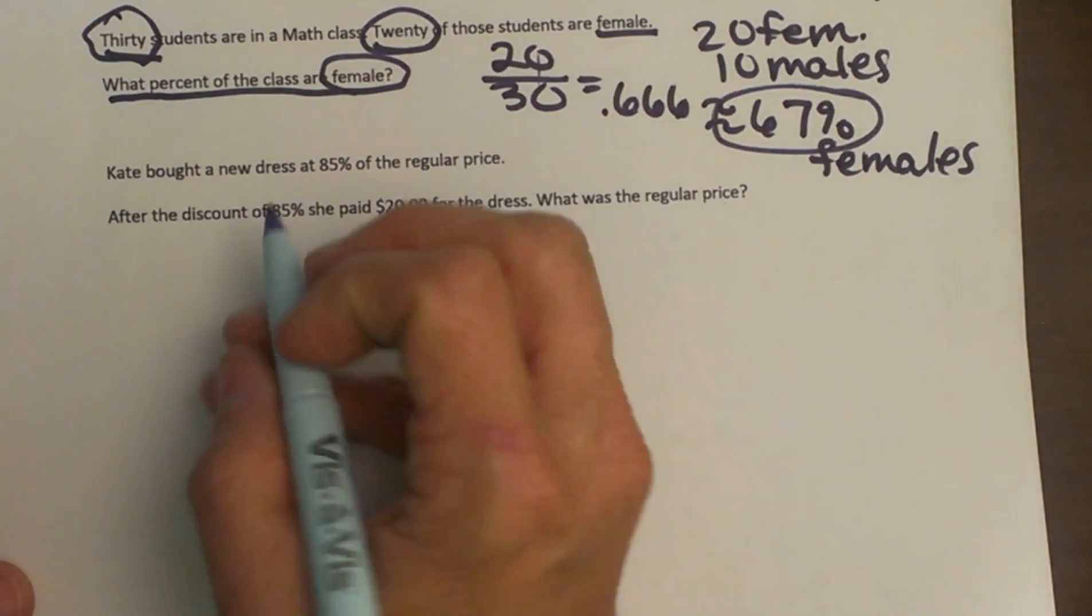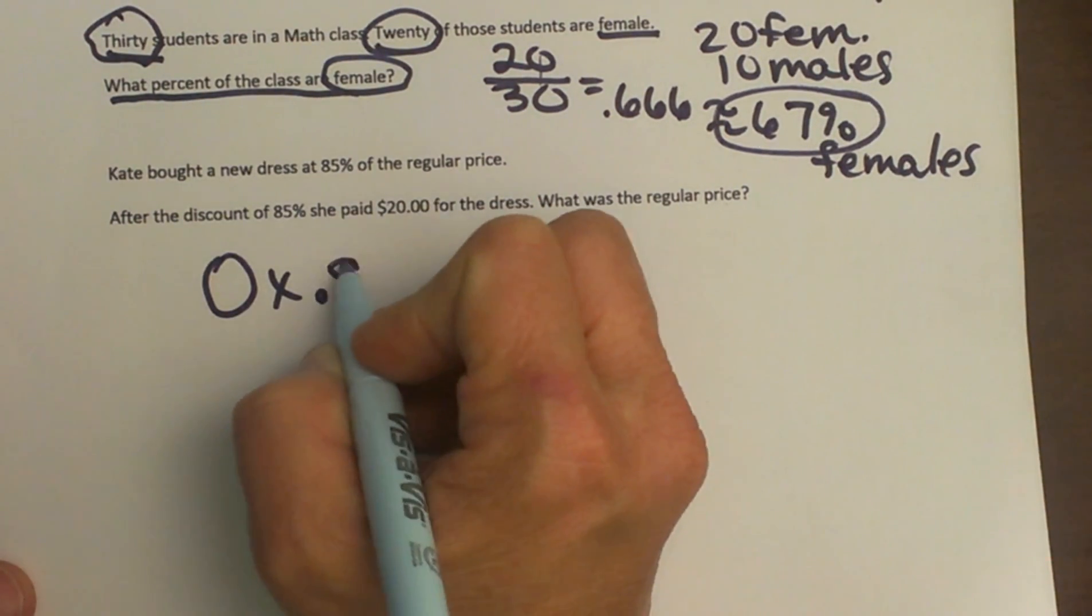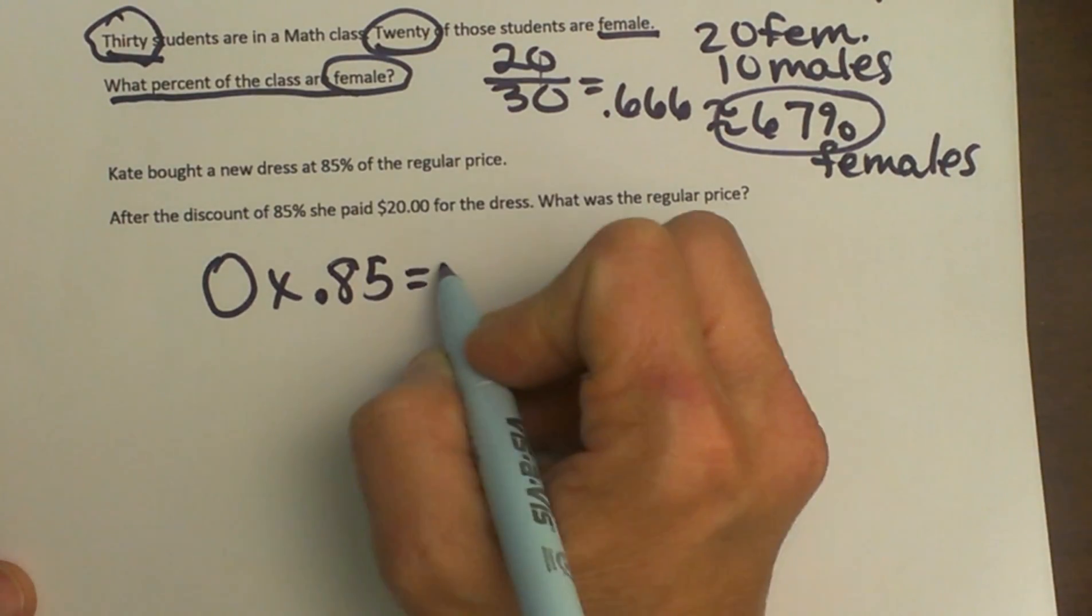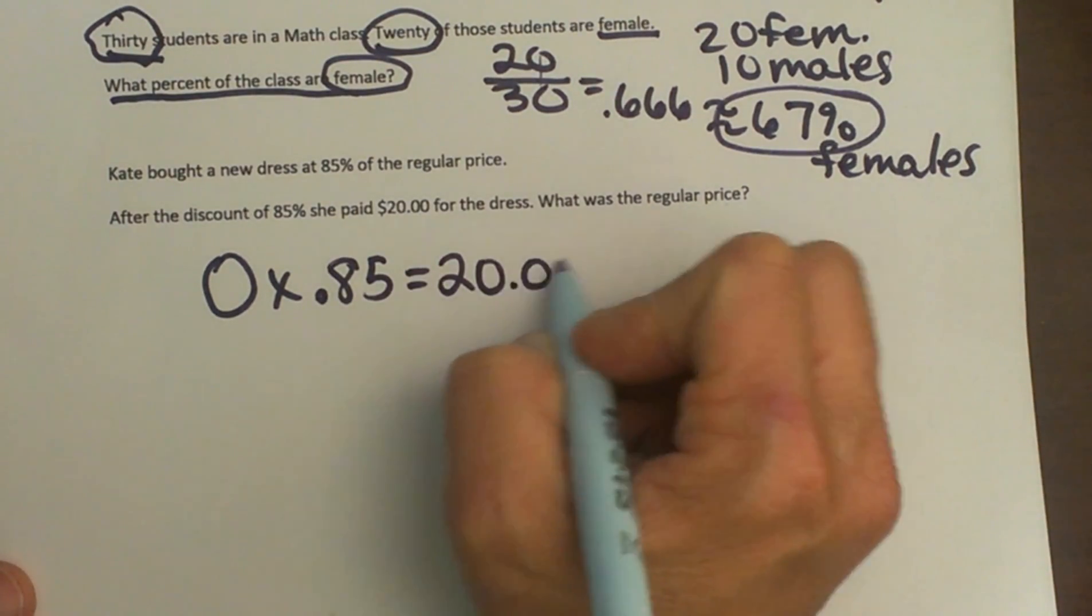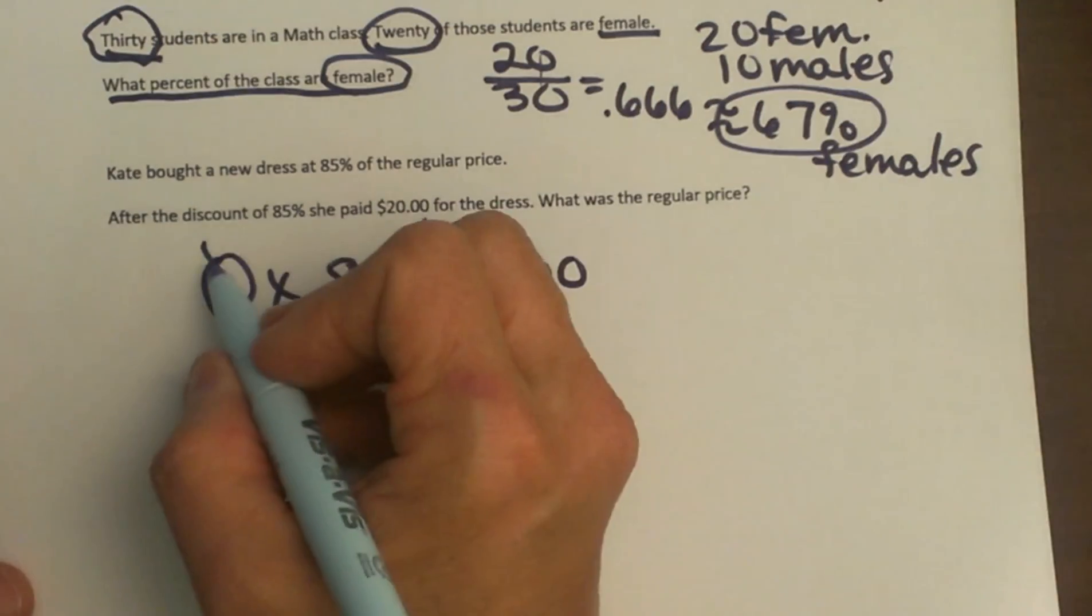So we are going to take the original price, we will call that O, times 85%, and that gives me $20. O stands for original, I will call that original.